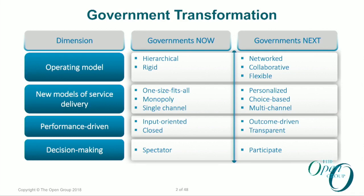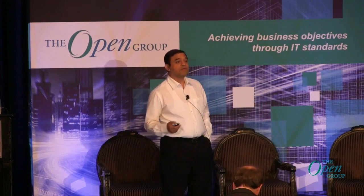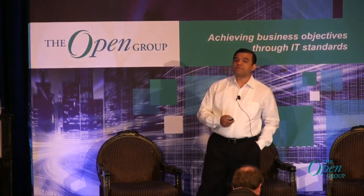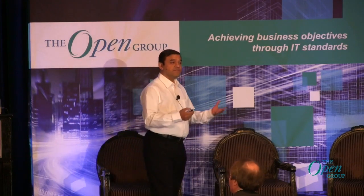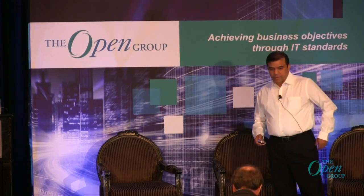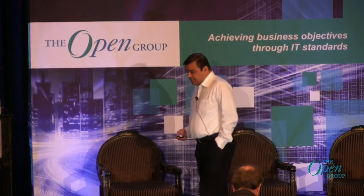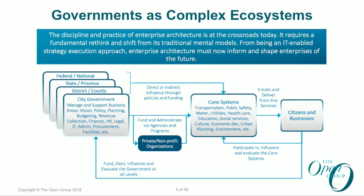What governments are basically trying to achieve is that they're trying to become more collaborative, more flexible. They are delivering their services through multiple channels, becoming more outcome-driven. Transparency is definitely on their agenda, and citizens are part of this entire transformation. Typically in discussions around enterprise architecture, there's a lot of focus on business and technology, and we forget that there are people consuming those services — citizens.